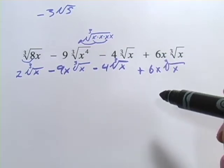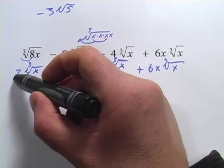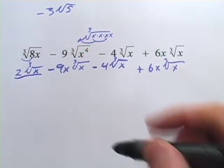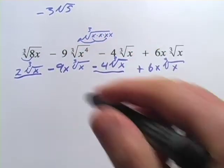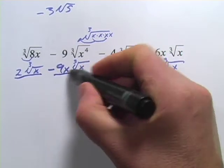Now we need to look for like terms. And what we have here are numbers times the cube root of x, these two, and we have numbers times x times the cube root of x.